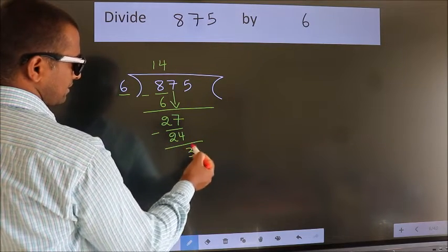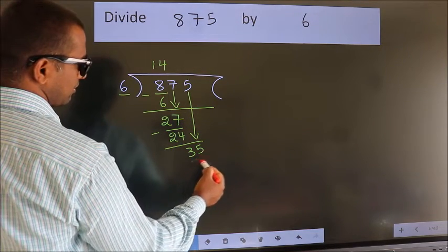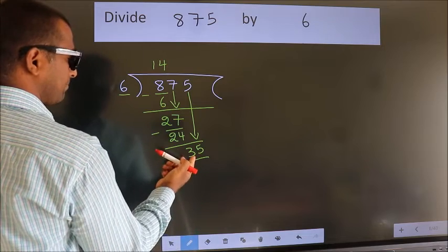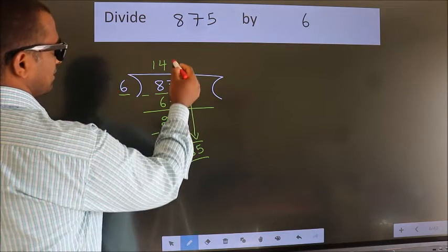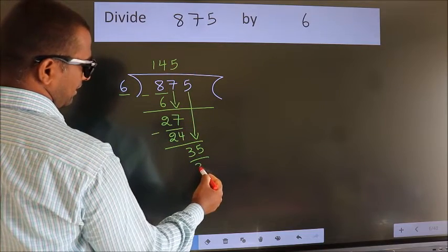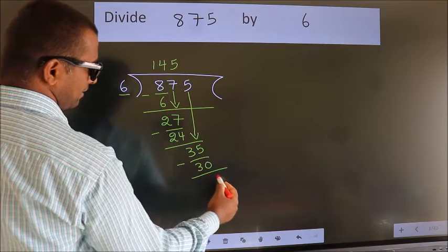After this, bring down the beside number. So, 5 down. So, 35. A number close to 35 in 6 table is 6 fives 30. Now, we subtract. We get 5.